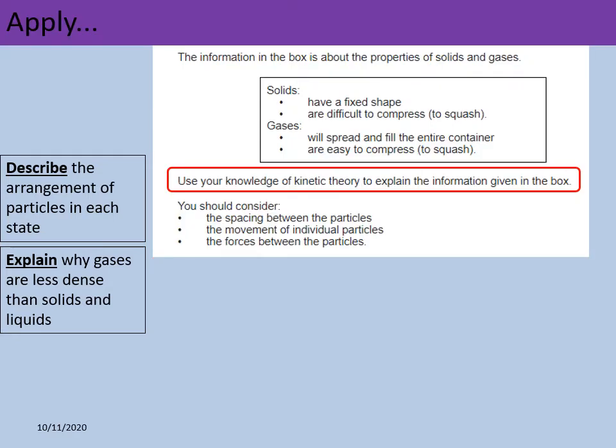So it's very common in exams for you to be asked to use that idea of kinetic and particle theory of solids, liquids and gases to explain different properties. So this is a question from an exam paper, it's six marks. It says the information in the box is about the properties of solids and gases and they've told us that solids have a fixed shape and they are difficult to compress and gases will spread and fill the entire container and they are easy to compress. The question is to use your knowledge of kinetic theory to explain the information given in the box.